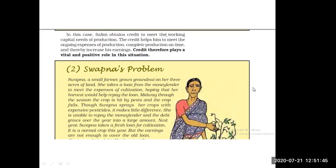To repay her loan, Swapna had to sell a portion of her land — clearly much worse than before. Whether credit is useful or not depends on the risk in the situation and whether there is some support in case of loss. If support is available, the borrower can come out of the debt trap. Otherwise, the situation becomes very painful to recover from.